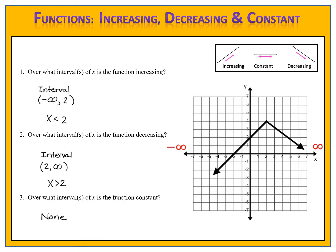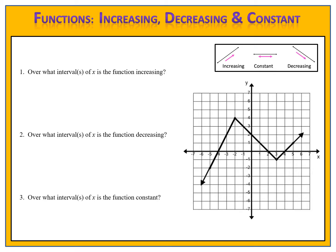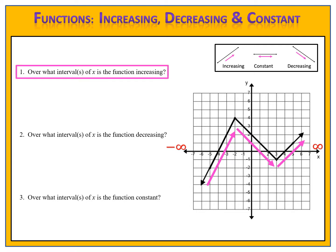Let's look at another example. On this example, we have a graph that first increases, then decreases, and then increases again. We notice that there are arrows on the end, which means we have to write our negative infinity and positive infinity on the x-axis. Now we want to identify the intervals of increase, decrease, and where the function is constant. Please pause the video here and come back when you're ready to compare answers.